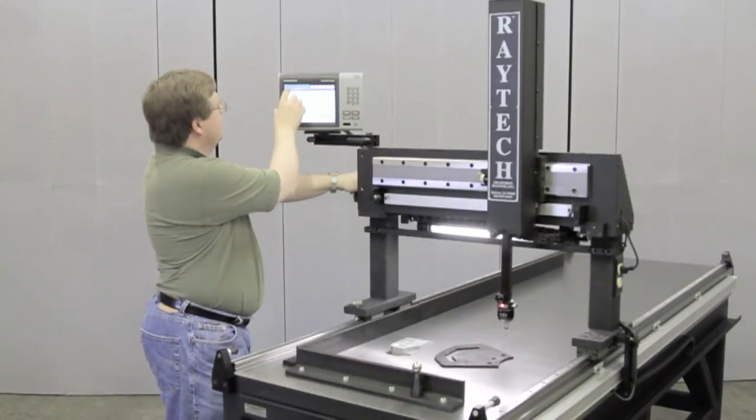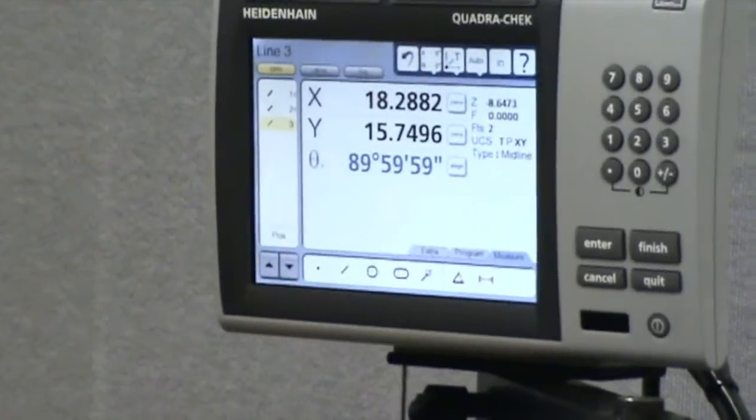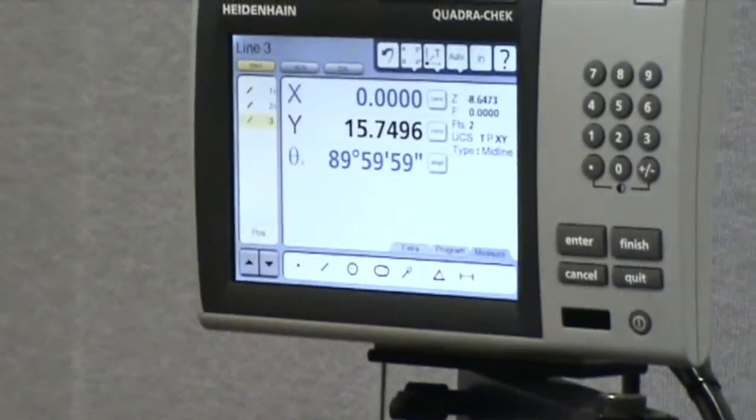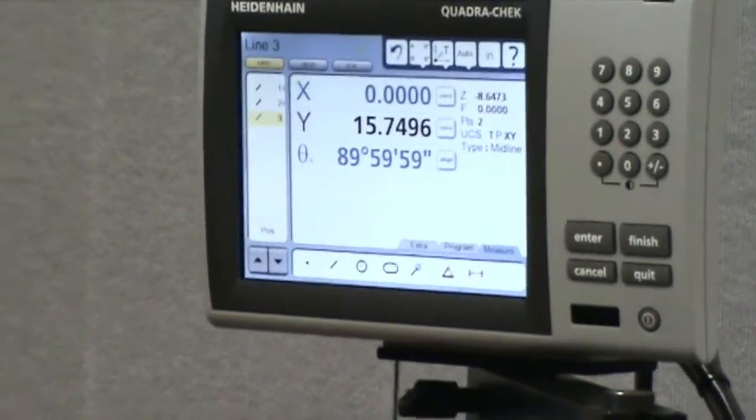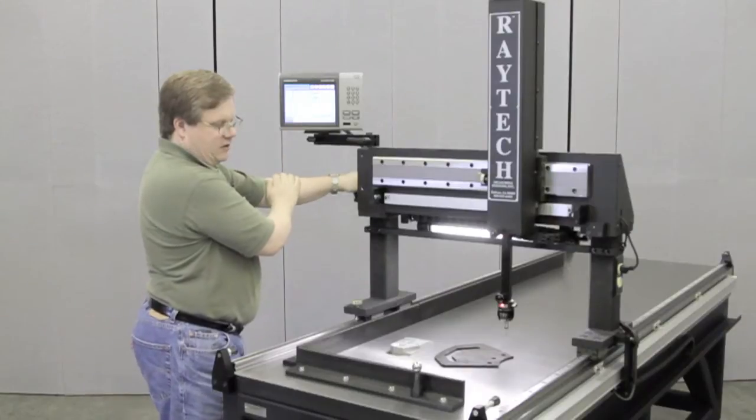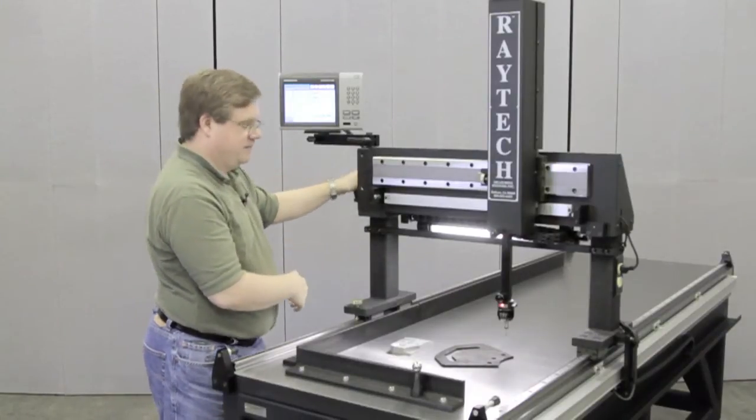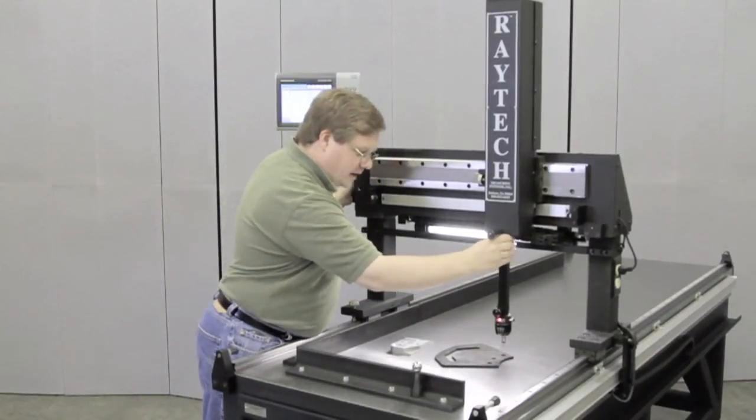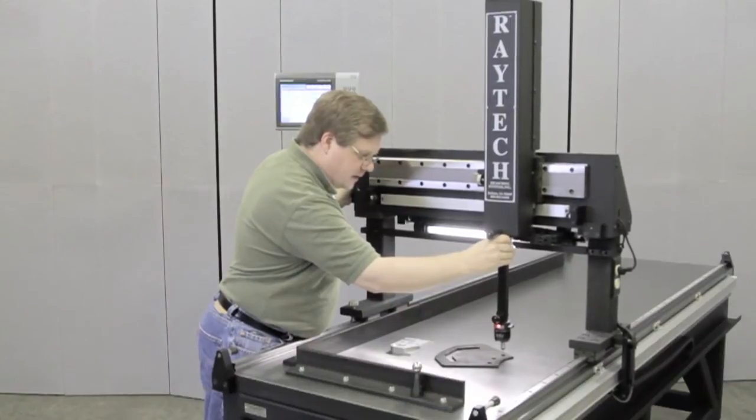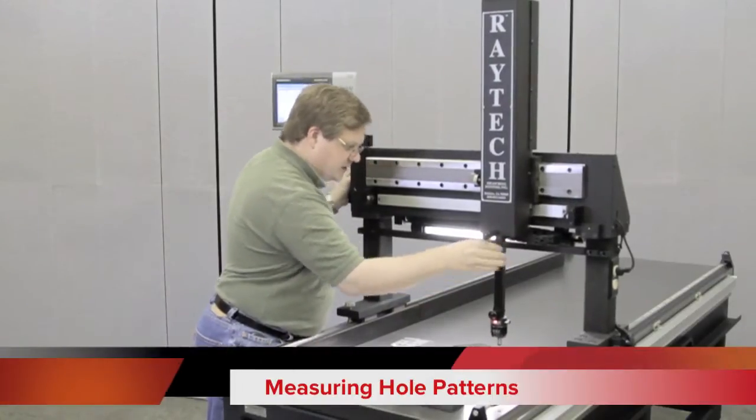We can go to the readout view, we can align it to that and we can zero out our x-axis along that center line. Then we can check our feature measurements to that center line. Down on the part we can come in and probe each of these hole locations.